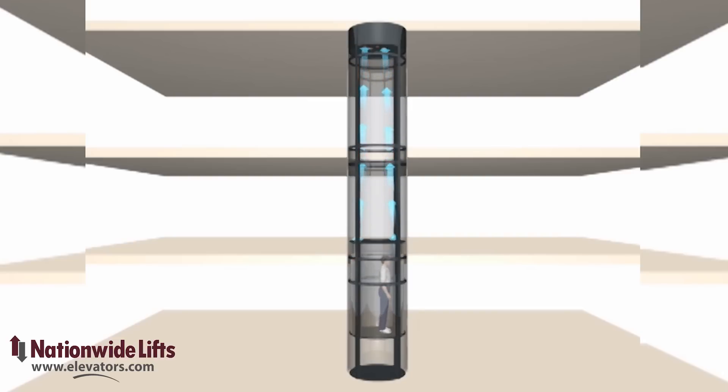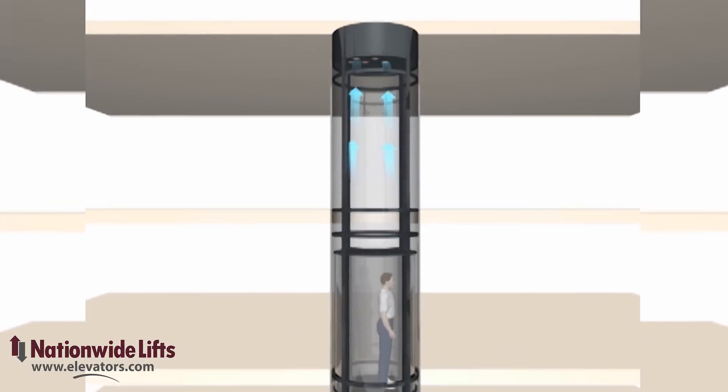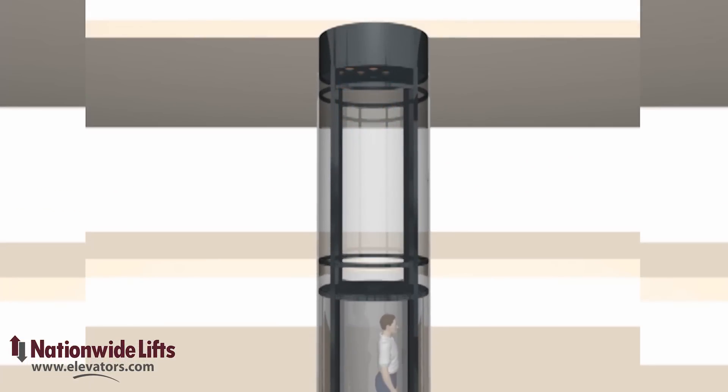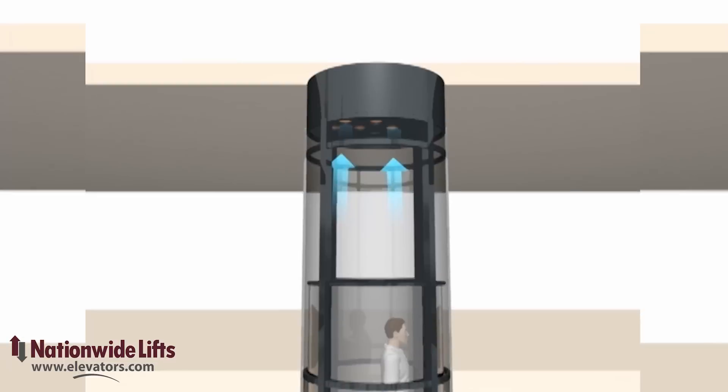When the cab arrives at a landing, it travels a few inches past the landing and sets mechanical brakes. The cab then lowers onto the brakes. When the cab is stationary at a landing, it is mechanically set and not relying on air pressure.